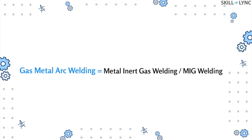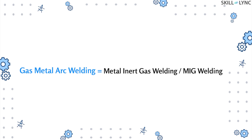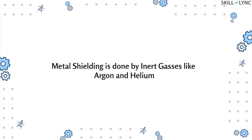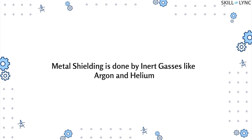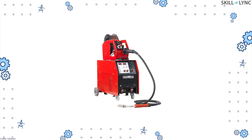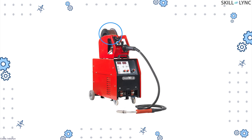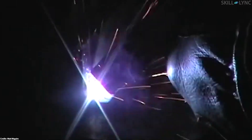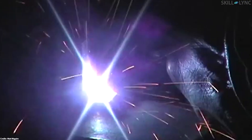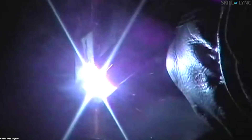This is where gas metal arc welding comes into play. Gas metal arc welding is normally called metal inert gas welding, or MIG. Similar to TIG welding, shielding of the metal is achieved by flushing the welding surface with inert gases like argon or helium. In this type of welding, the electrode is consumable and is fed into the torch through a spool. When the machine is turned on, an arc is generated between the electrode and the workpiece.